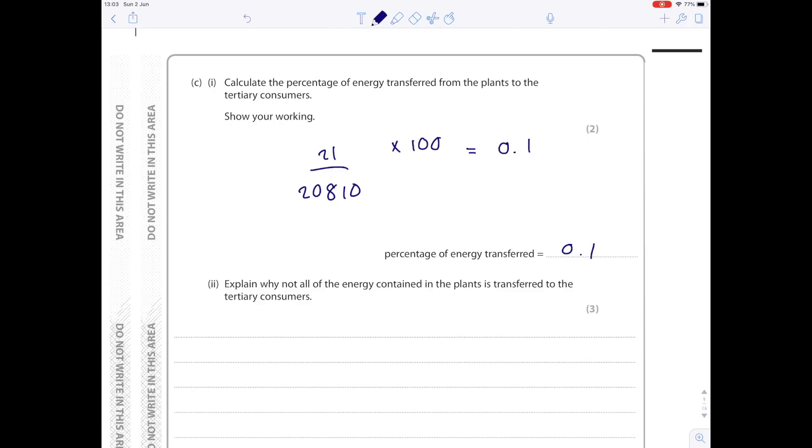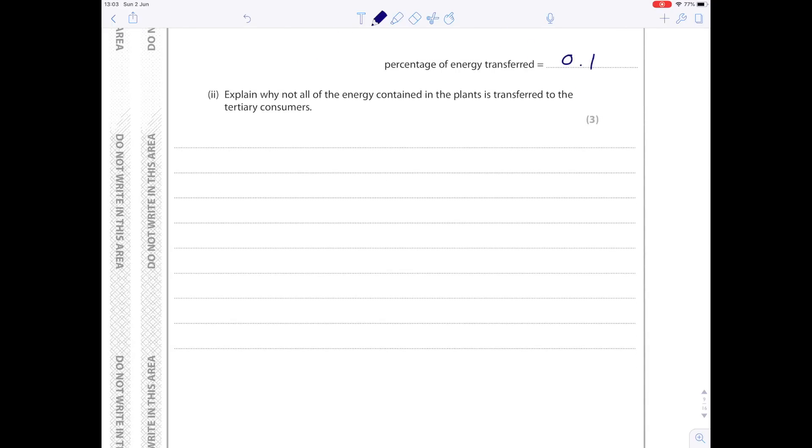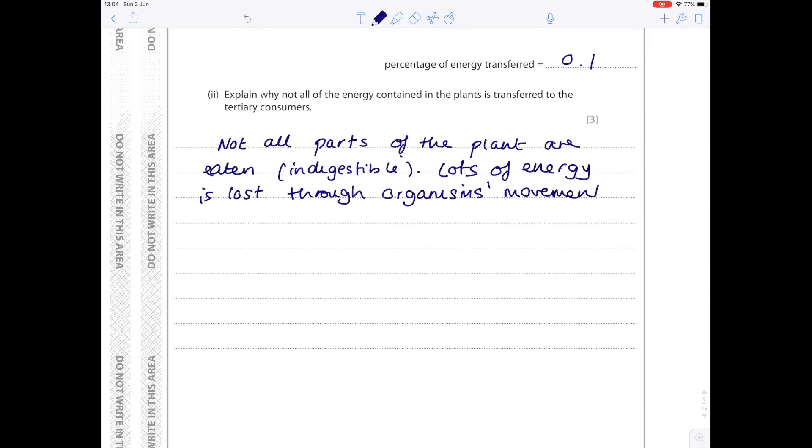Explain why not all the energy contained in the plants is transferred to the tertiary consumers. This is quite a nice question. First of all, not all parts of the plant are eaten or they're indigestible. Lots of energy is lost through organisms' movement, respiration, and egestion. Excretion is removal of waste products of metabolism. Egestion is removal of feces from the anus. So I've crammed that line full of marking points. And that's what you need to do in order to score lots of marks.